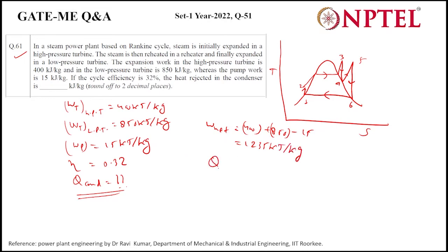And the efficiency of the cycle is given, so heat input we can find from W net by efficiency. So when we do this, it will become 3859.375 kilojoules per kg.